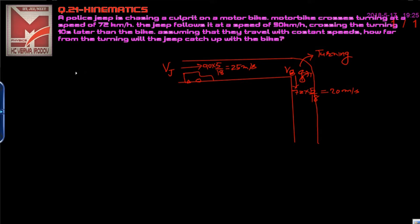This is question number 21 from kinematics, rest and motion, in S.V. Burma. A police jeep is chasing a culprit on a motorbike. The motorbike crosses the turning at a speed of 72 km/h, which converts to 20 meters per second. The jeep follows at a speed of 90 km/h, which is 25 meters per second.